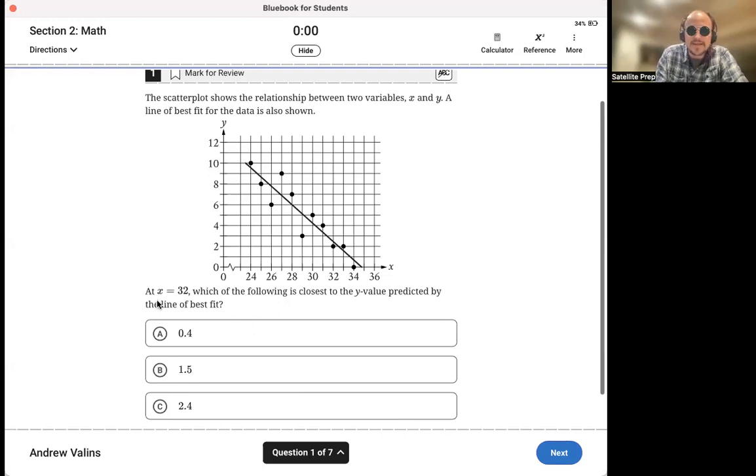And it says X equals 32, which of the following is closest to the Y value predicted by the line of best fit, which means we got to go to 32 on the X axis. And we got to travel up until we hit the Y, until we hit the line of best fit.